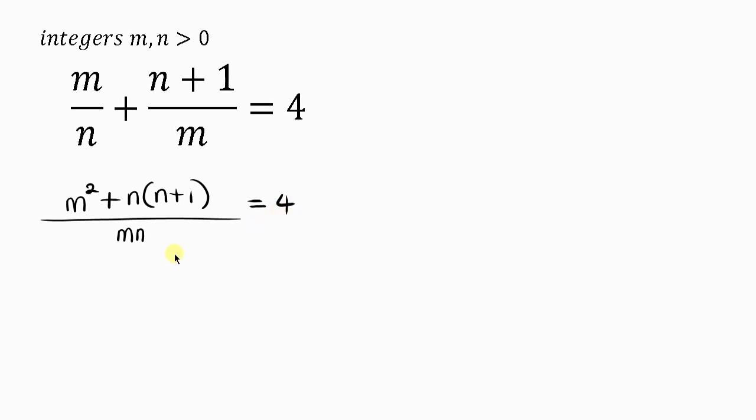Our next step will be to cross multiply. So we have m² + n(n+1) = 4mn. This is what we have from cross multiplying.